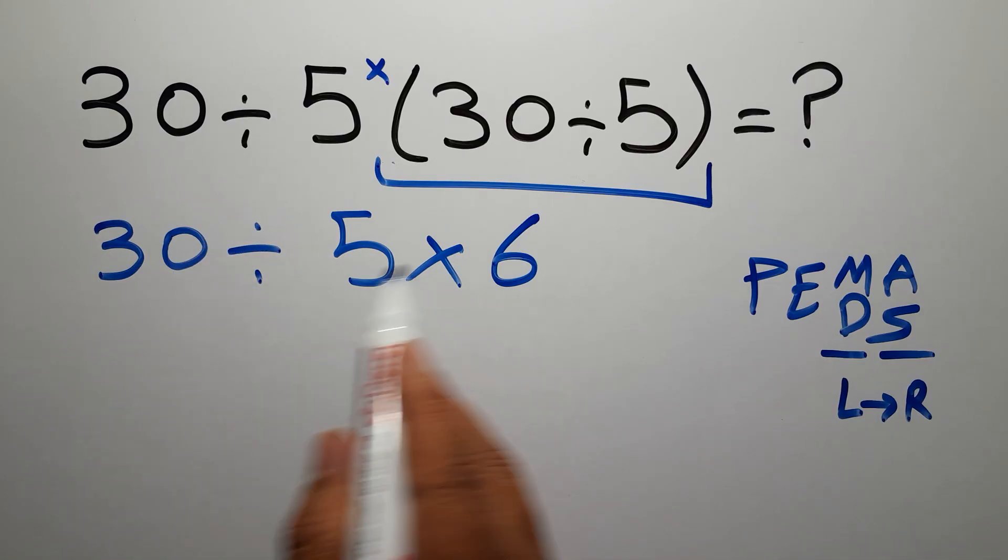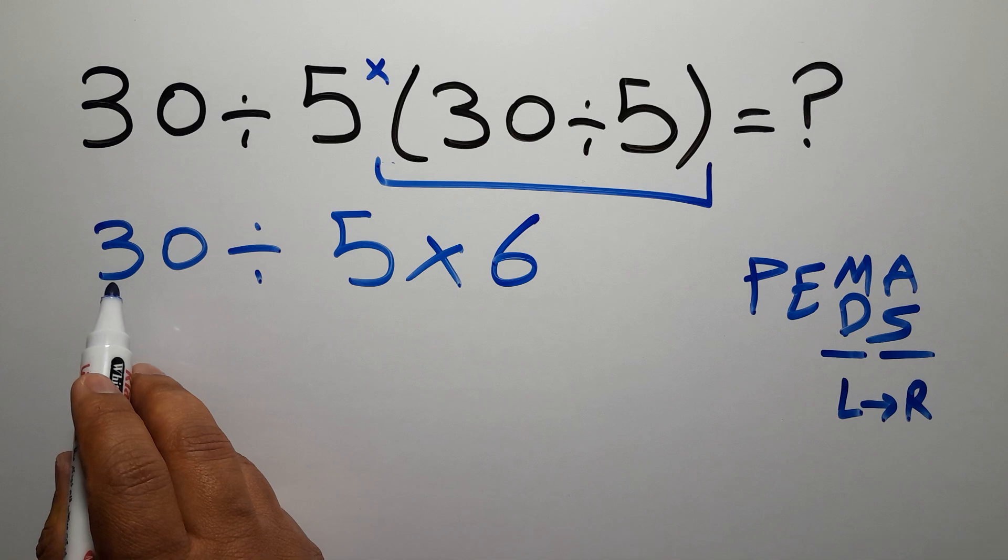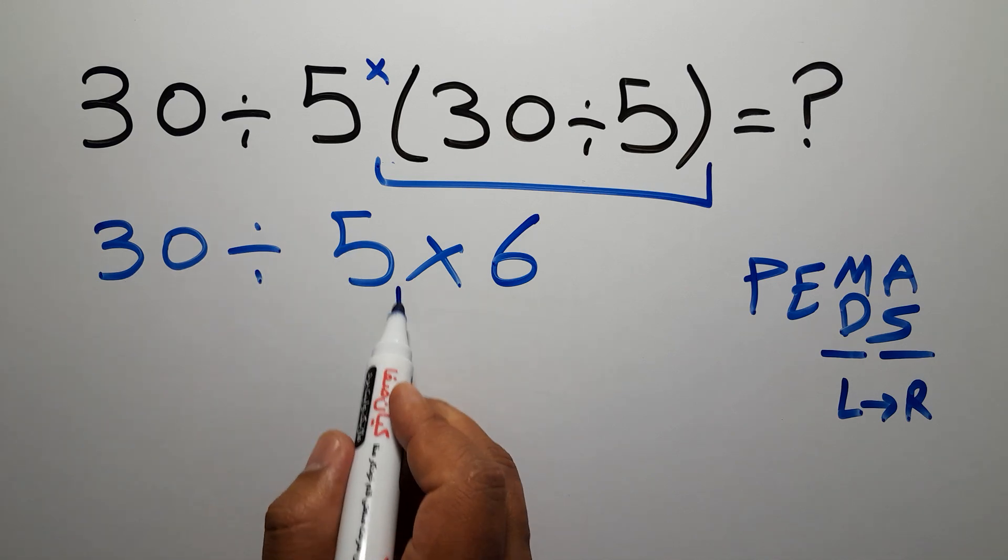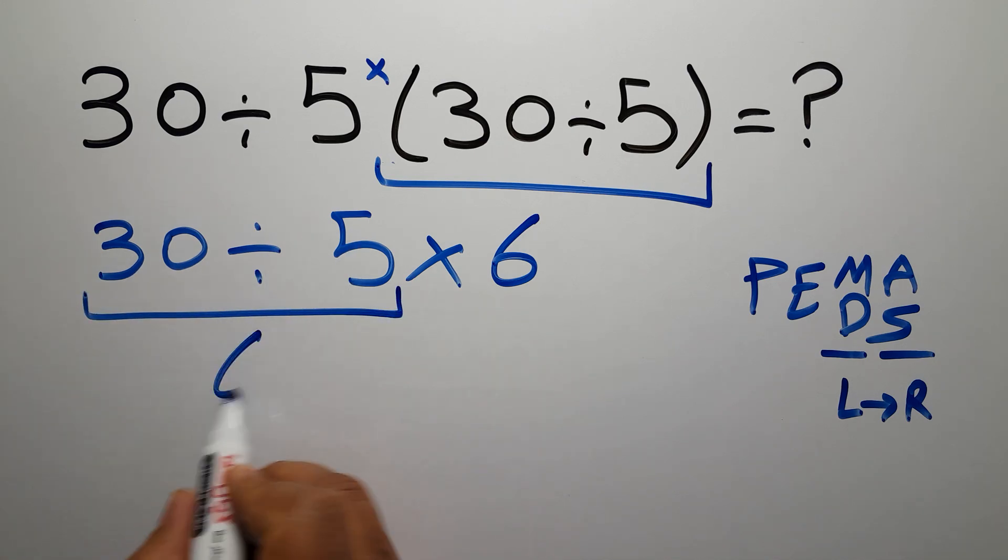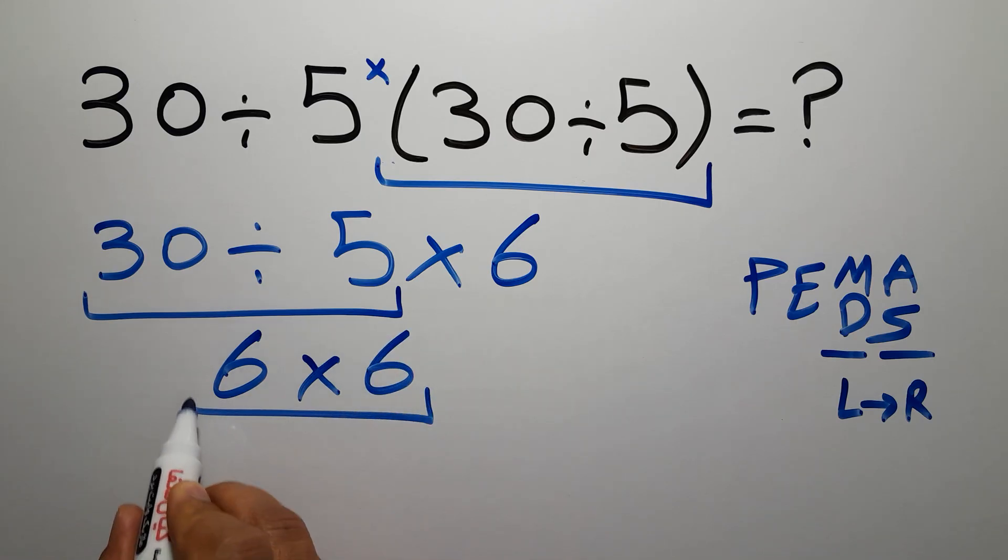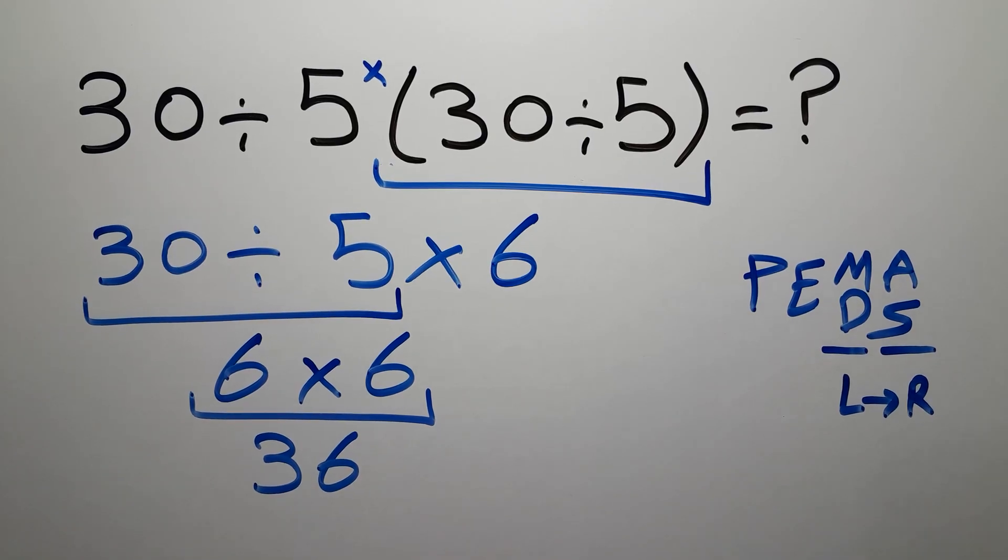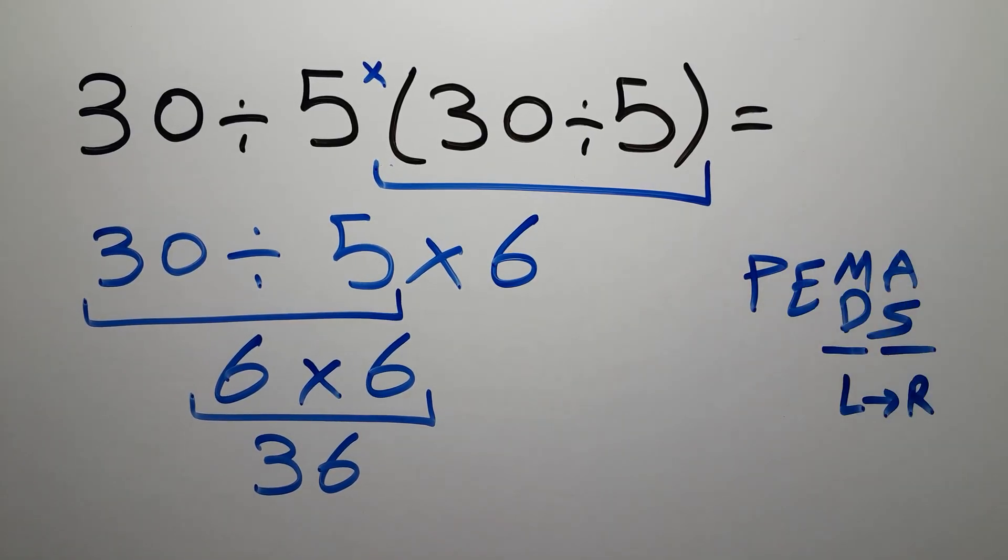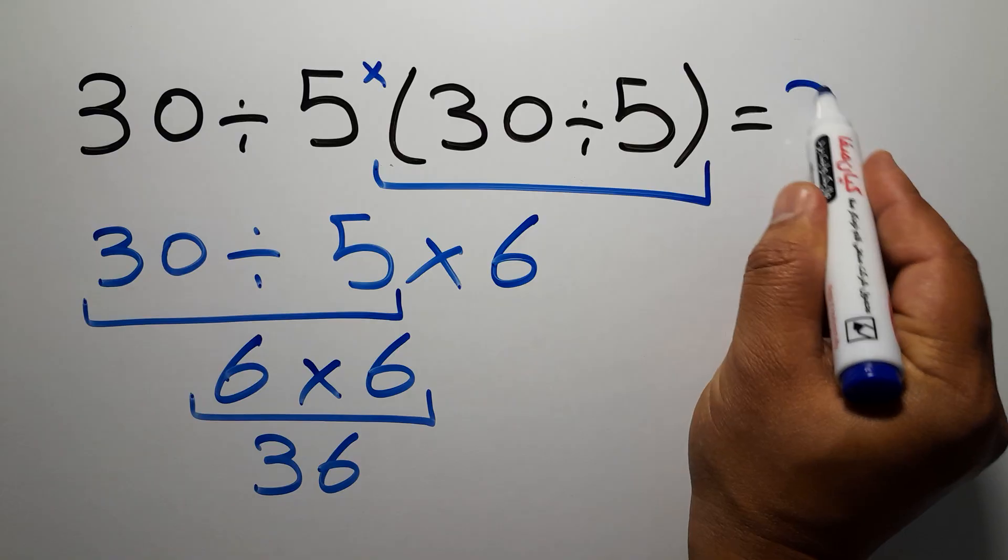30 divided by 5 gives us 6, so 6 times 6 which equals 36. And this is our final answer to this problem. The correct answer is 36.